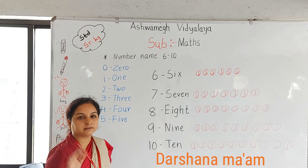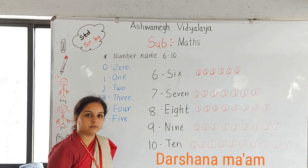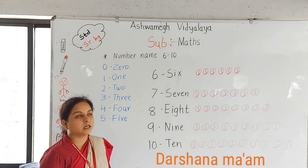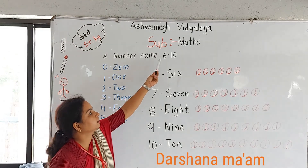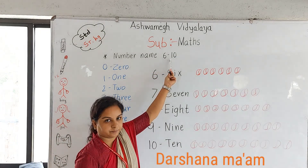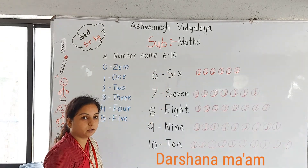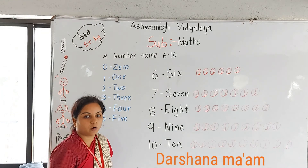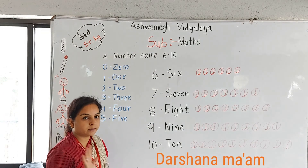Hello students, my name is Darsana Desai from Ashdomek Vithalaya. Today's topic is number 8, 6 to 10. Why 6 to 10? Because in the previous video, we saw 0 to 5 spelling.